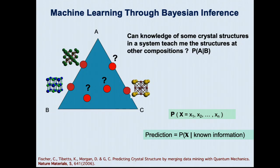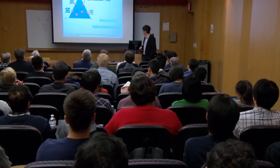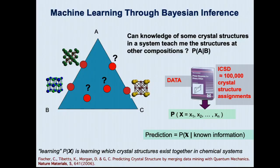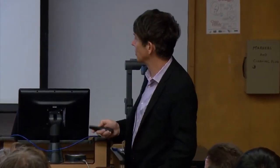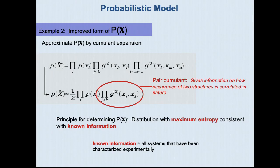So we wanted to find the distribution with maximal entropy — representing the known information with minimal bias. We did that using a cumulant expansion. And what was interesting is that the result contained physically identifiable information. A cumulant tells you that two phases occur in the same system with much higher probability than average. For example: if you find the MgCu2 structure at some composition in a binary, you are very likely to find the Fe3C-type structure at the AB3 composition — almost nine times more likely than random. This is a size-controlled structure, and the system learns that.